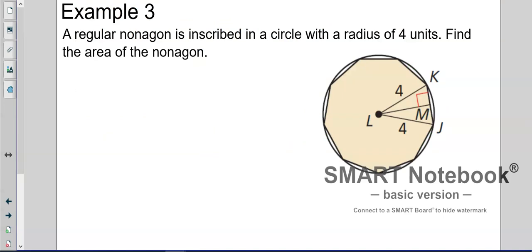A regular nonagon is inscribed in a circle with a radius of 4 units. Find the area of the nonagon. We need this line right here, so we have a little bit of work to do.